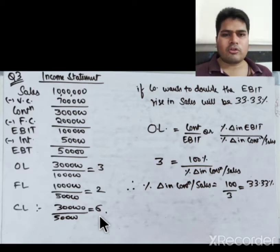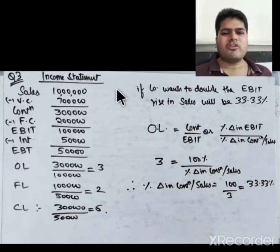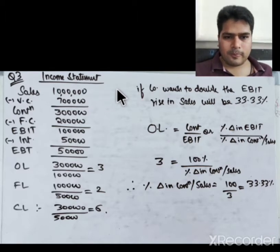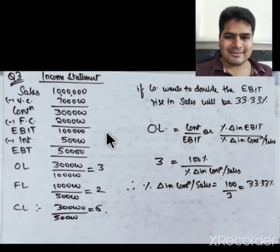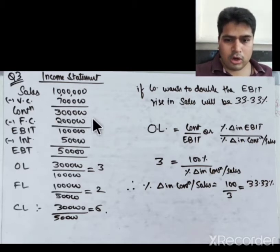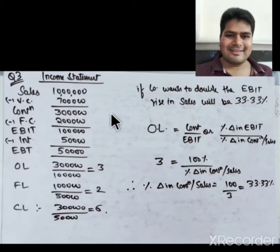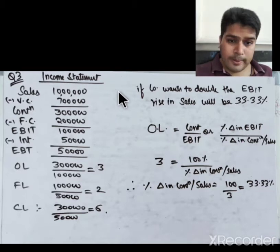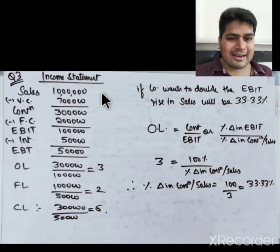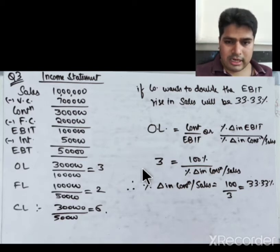Now the important part: if we want to double EBIT, how much should sales increase in percentage? Method 1: EBIT should become 2 lakhs. Fixed cost stays at 2 lakhs, so contribution must be 4 lakhs. Since variable cost is 70%, contribution ratio (P/V ratio) is 30%. So sales = 4 lakhs / 30% = 13.33 lakhs. Percentage increase = (13.33 − 10) / 10 × 100 = 33.33%.